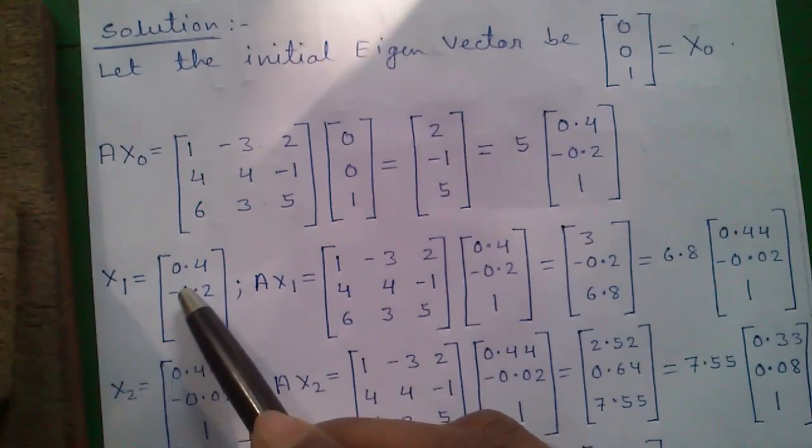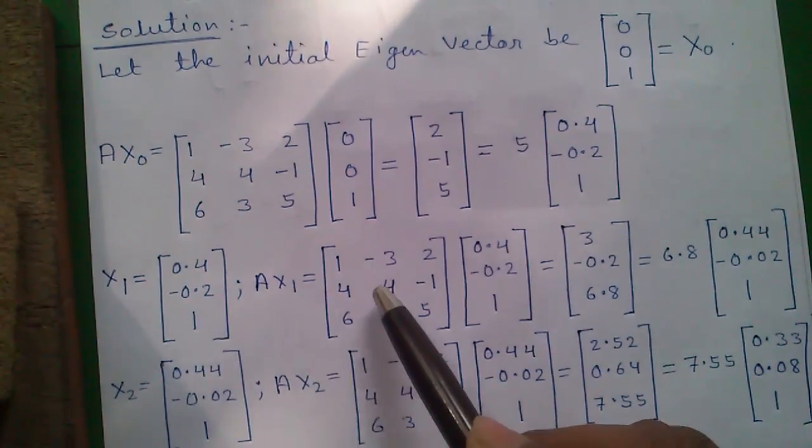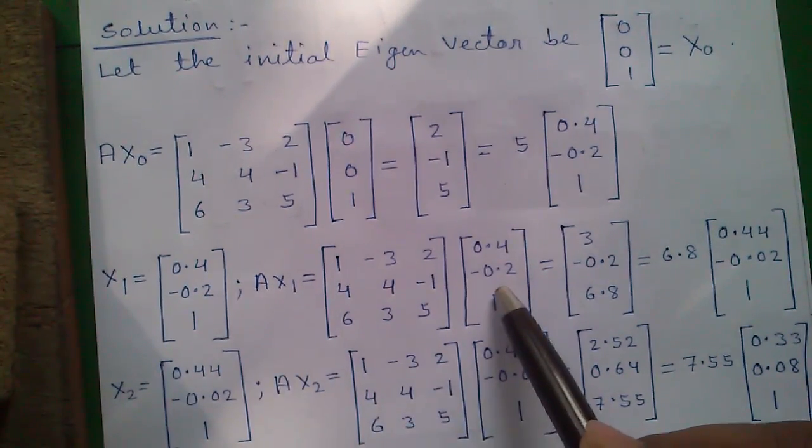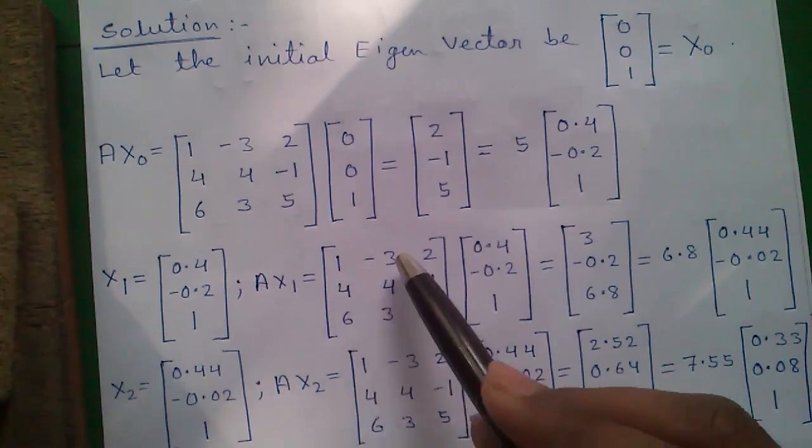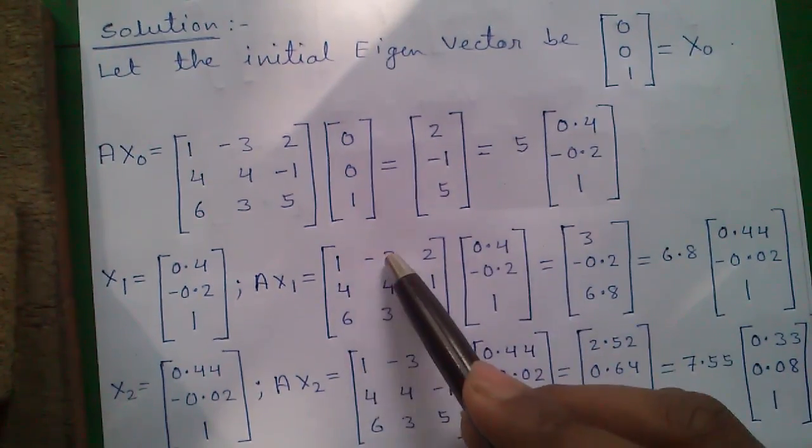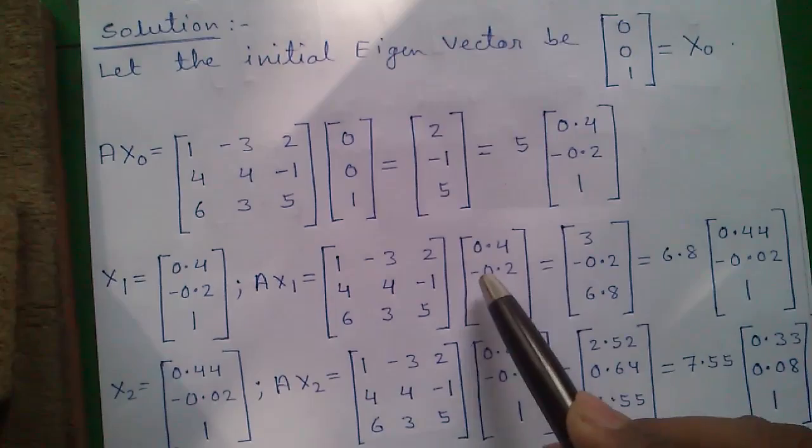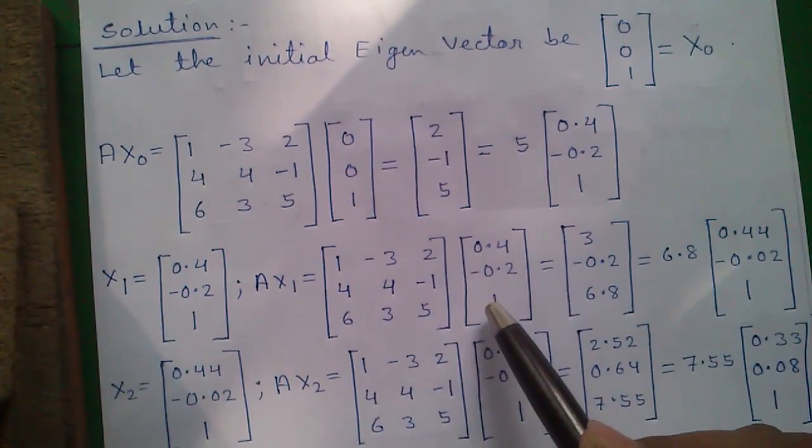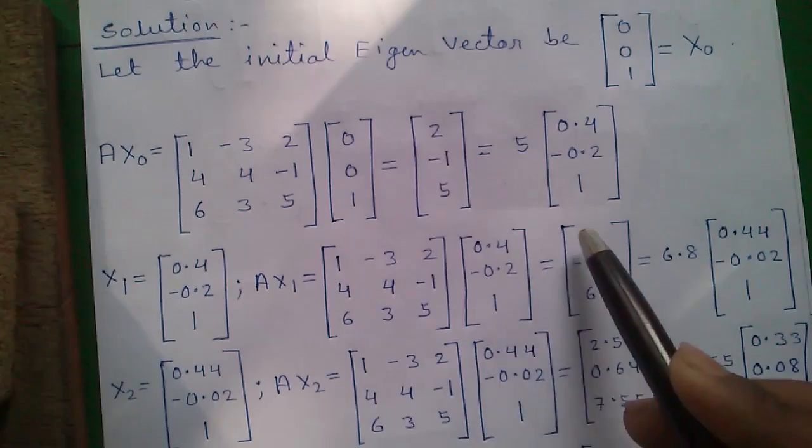A into x1 equals A into x1, same process. 1 into 0.4 plus -3 into -0.2 plus 2 into 1, which equals 3.